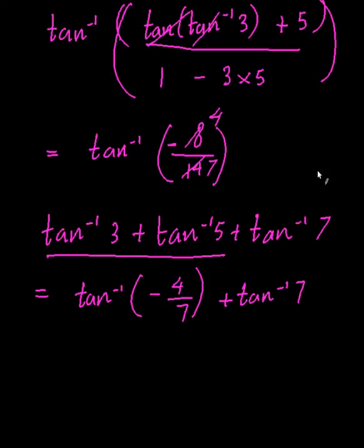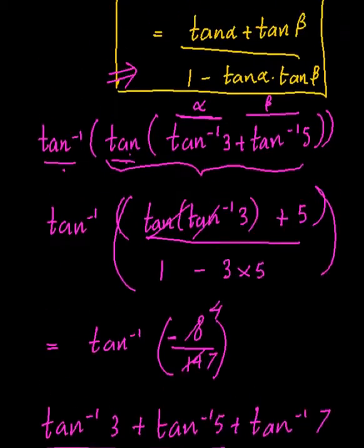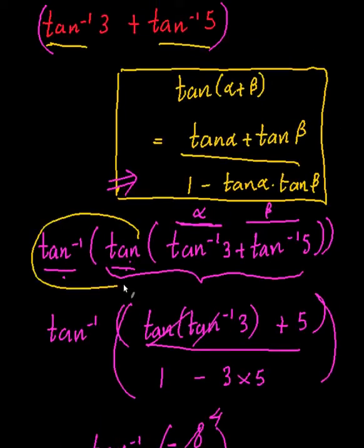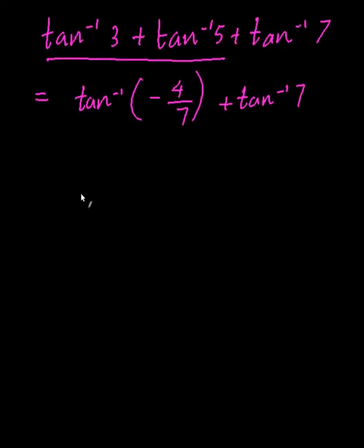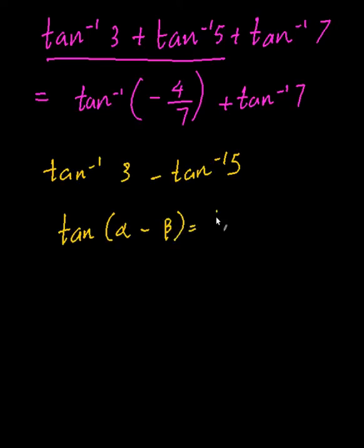Okay, but the biggest concept that I want you to take from here is this thing over here, rewriting as tan inverse of tan. If I happen to have a separate question that asks me to do tan inverse of 3 minus tan inverse of 5, you'd be using the other identity where you say tan alpha minus beta is equal to tan alpha minus tan beta, all on 1 plus tan alpha tan beta.